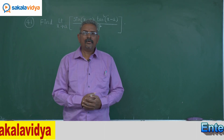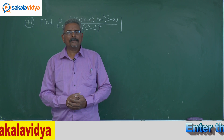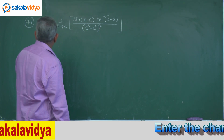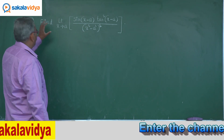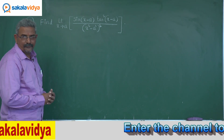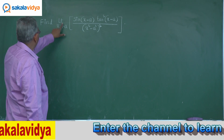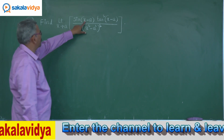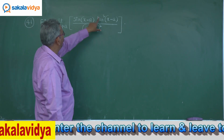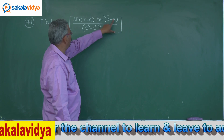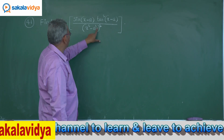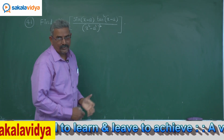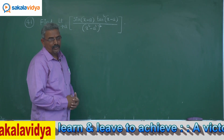One more problem on limits. Let me read the question first. Find the limit x tends to a of sin(x minus a) and tan square of (x minus a) divided by x square minus a square, whole square.